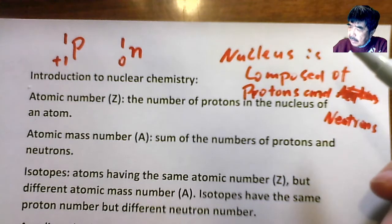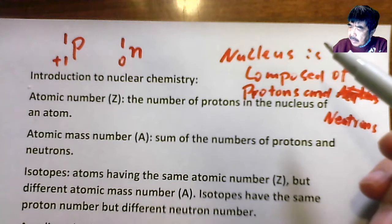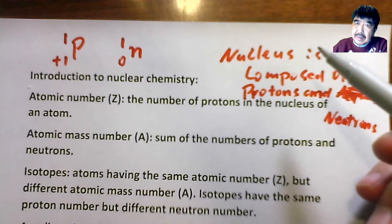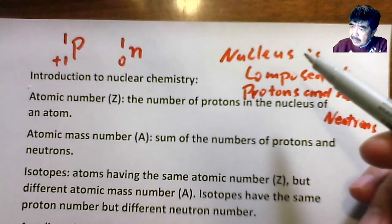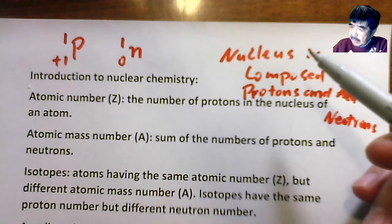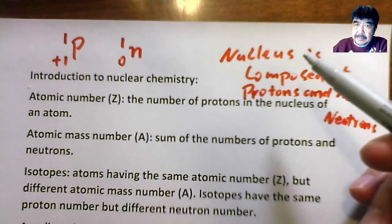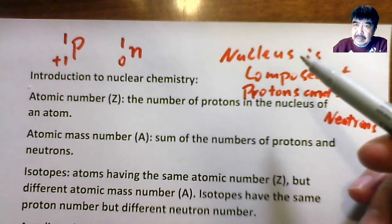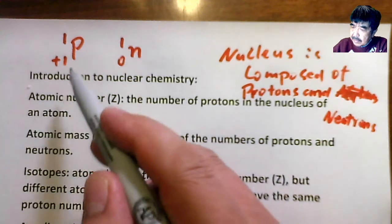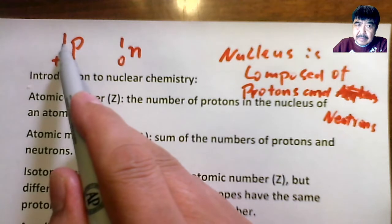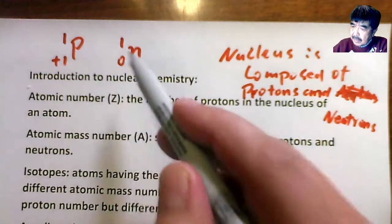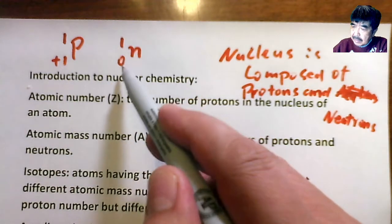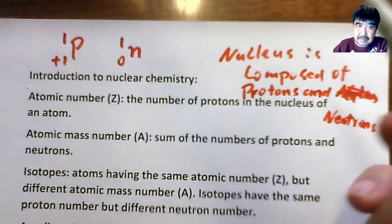Let's review the composition of the nucleus. Nuclei contain two particles. One is called a proton, another one is called a neutron. A nucleus has different energy levels. The proton has one mass unit and one positive charge. The neutron has one mass unit and has no charge, zero charge.